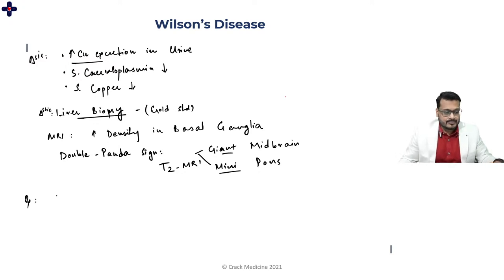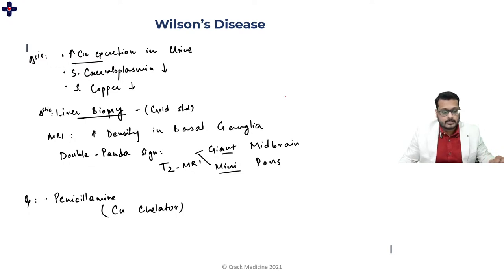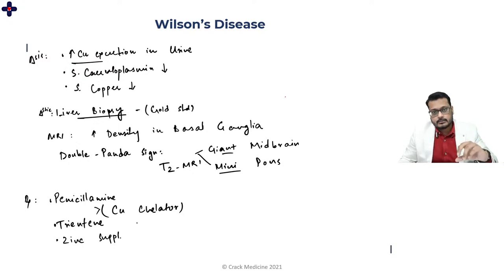Treatment of Wilson's disease begins with penicillamine, a copper chelator. A second copper chelator, trientine, is increasingly preferred. Both are copper chelators. The third treatment is zinc supplementation, which helps inhibit absorption of copper from the intestines, thereby reducing the overall copper load in the body.